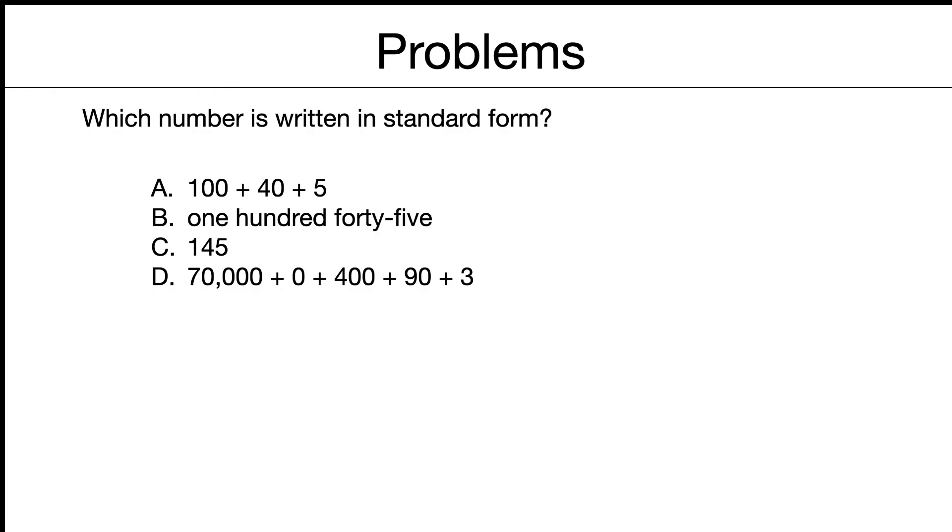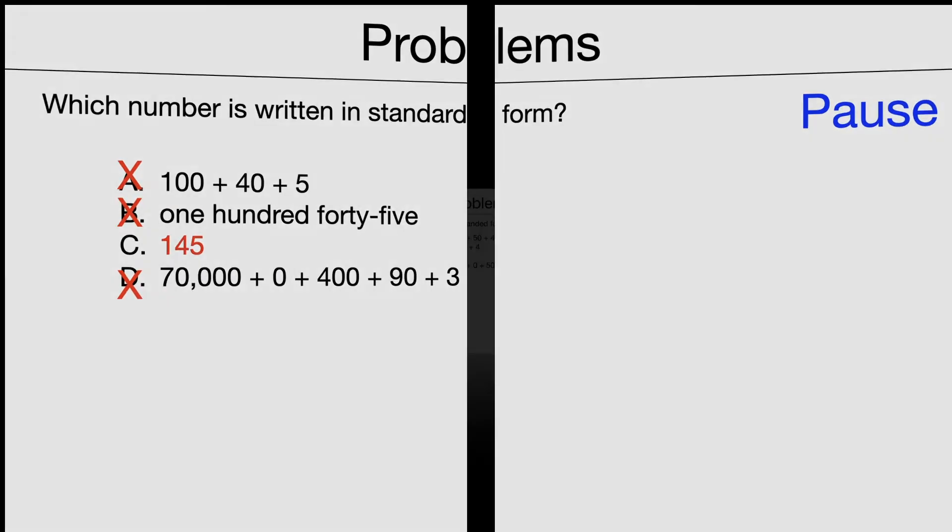Which number is written in standard form? Pause if you like. So we want standard form this time. So A is expanded form. We don't want that. And D is in expanded form. So that's no good. And B is in word form. So it's C. 145 is expressed in standard form.